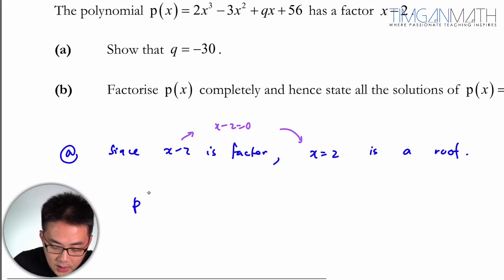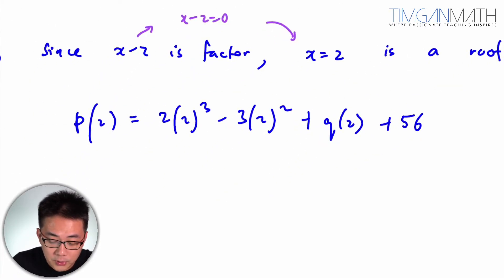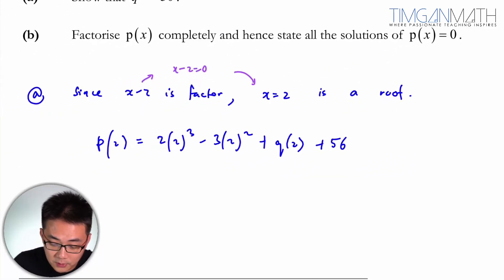So in other words, we could just write that P(2) is equal to 2 cubed minus 3 times 2 squared plus q times 2 plus 56. Just verify. This is just one mark. So you're able to solve this. So this would mean that the remainder would be 0 by factor theorem. So this would be 16 minus 12 plus 2q plus 56.